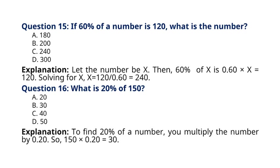Question 16. What is 20% of 150? A. 20, B. 30, C. 40, D. 50. Explanation: To find 20% of a number, you multiply the number by 0.20. So, 150 multiplied by 0.20 is equal to 30. So the correct answer to question 16 is option B. 30.